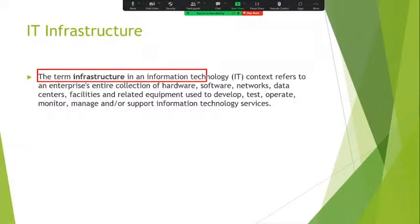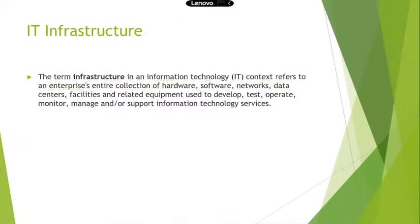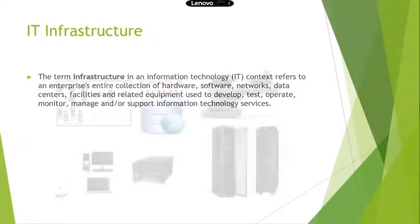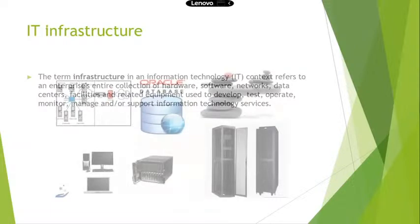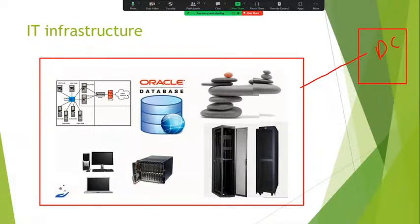The term infrastructure, as in information technology, refers to a collection of hardware, software, switches, and network load balancers — that is called IT infrastructure. Now, to maintain our own IT infrastructure, we require a data center. If you go for TCS, Capgemini, Wipro, Accenture, any company in the world, they will have their own data center.